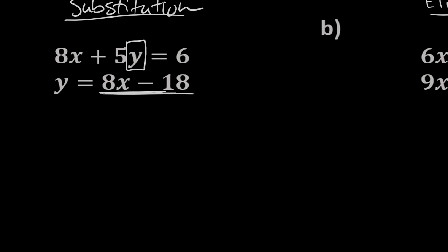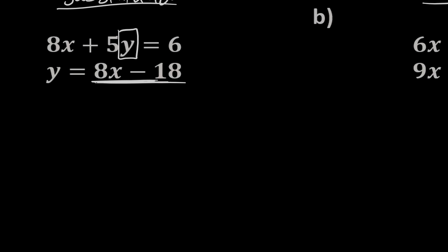So let's go ahead and look at the work, what it should look like for these. So I'm going to rewrite the top equation. I've got my 8x plus 5, and here comes the substitution. Instead of writing y, I'm going to write 8x minus 18. And on the other side of that, that equals the number 6. So again, this is exactly, exactly the first equation. The only thing that's different is instead of writing y, I've put in an appropriate substitution for it.